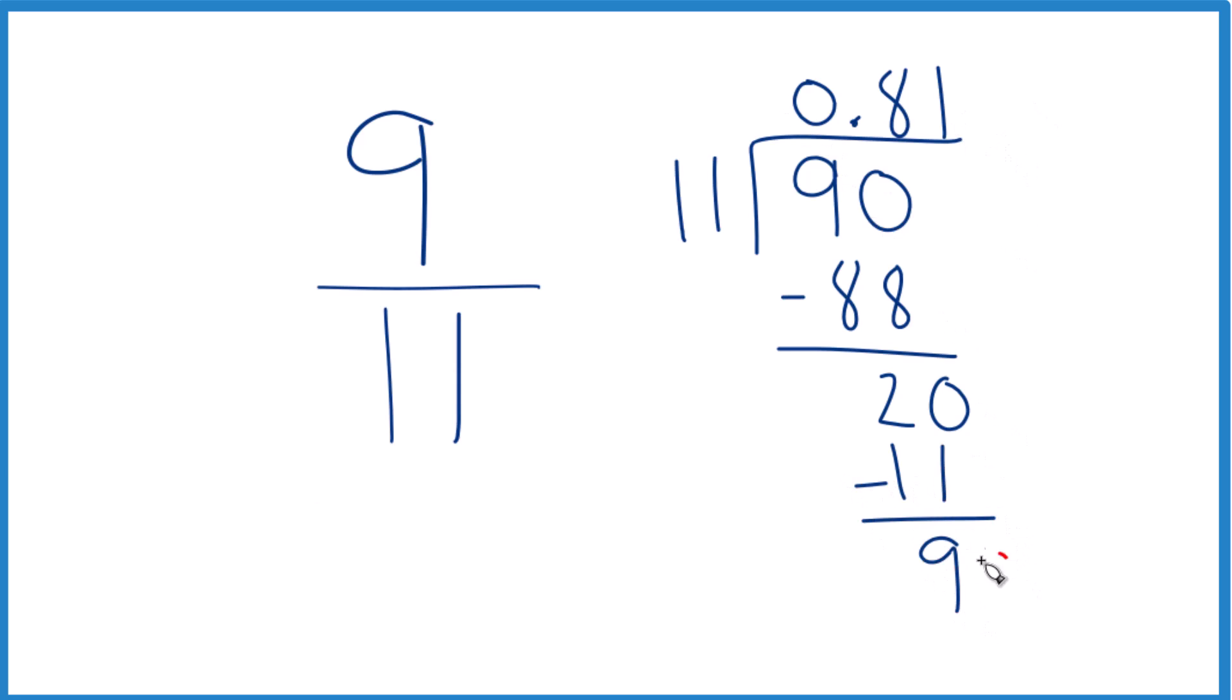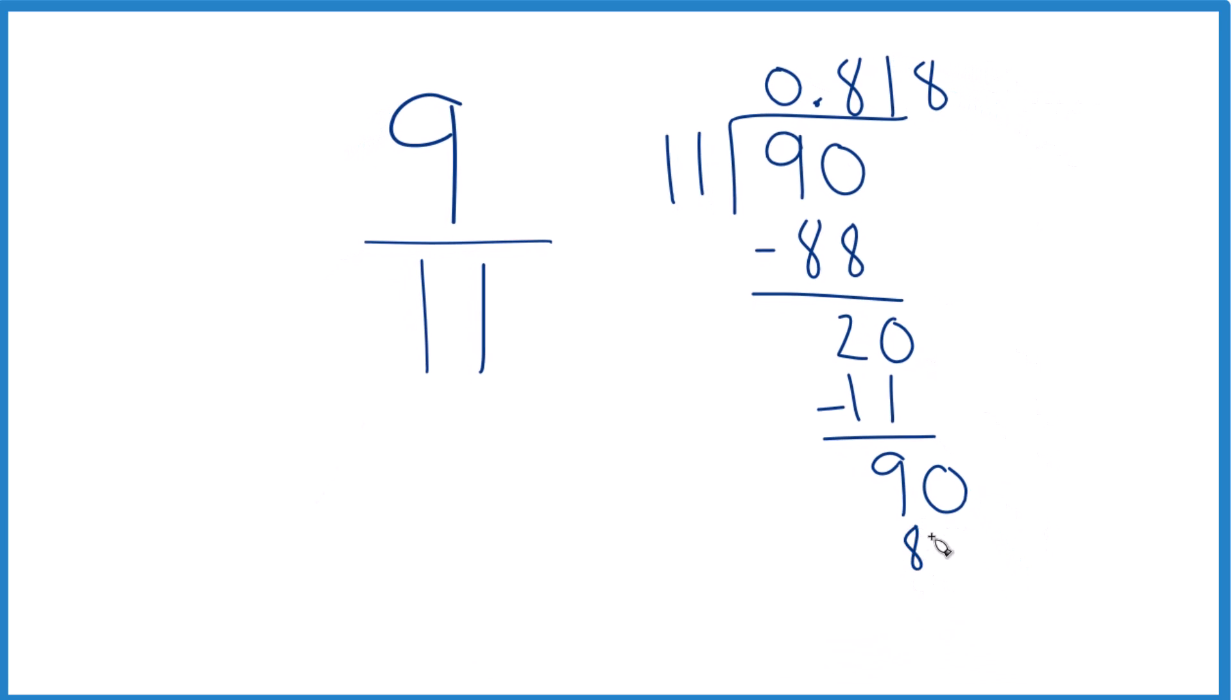Move over 1 call it 90 and we know 8 times 11 is 88. Subtract and we get 2. Move over 1 and call it 20 and you can see we're getting a repeating fraction here and this just keeps going.